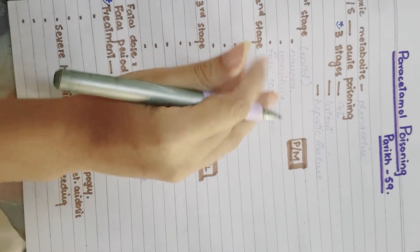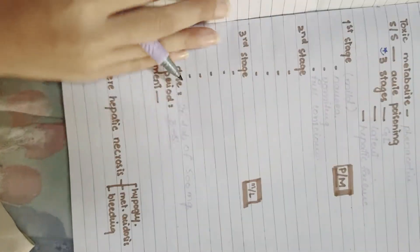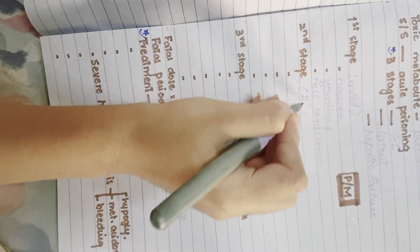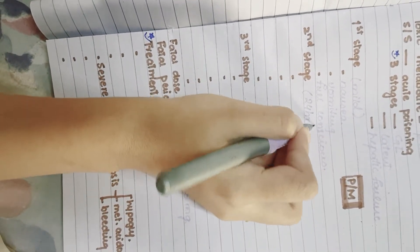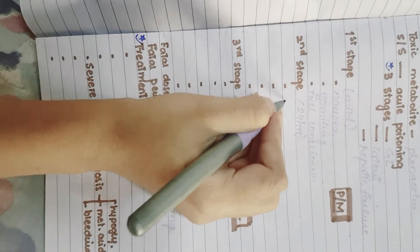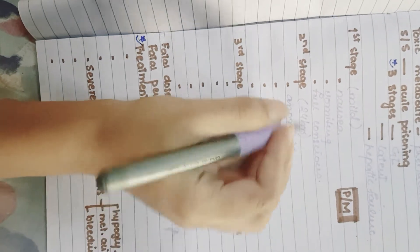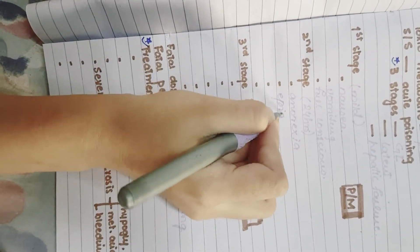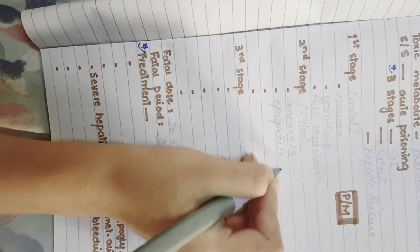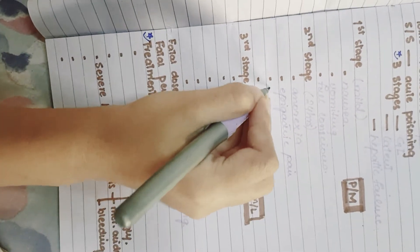The second stage occurs after 24 hours. The first symptoms that appear are anorexia, epigastric pain, and malaise.